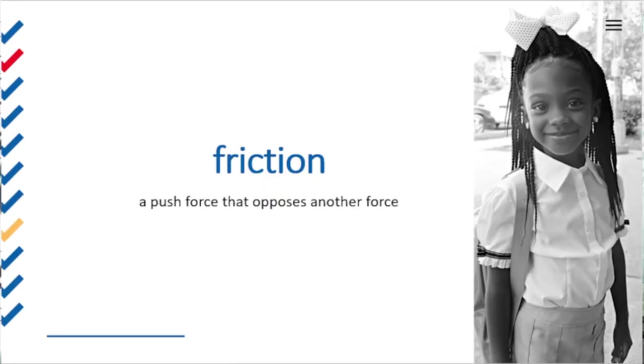Friction is simply a push force acting against another force. An example is when we roll a ball in the grass — eventually, the friction force from the ground pushes against the direction of the ball's rolling and stops it. Another example comes from the ground and sidewalk: when you move in your car or walk down the sidewalk, there's a force from the ground pushing against your tires or your feet.